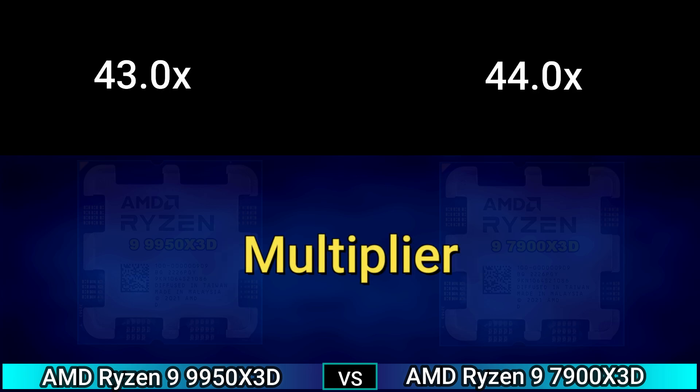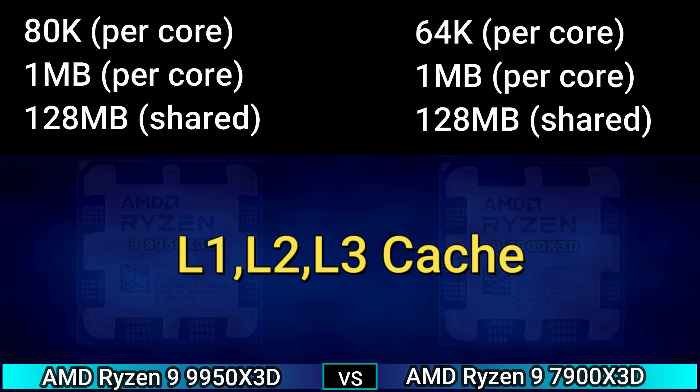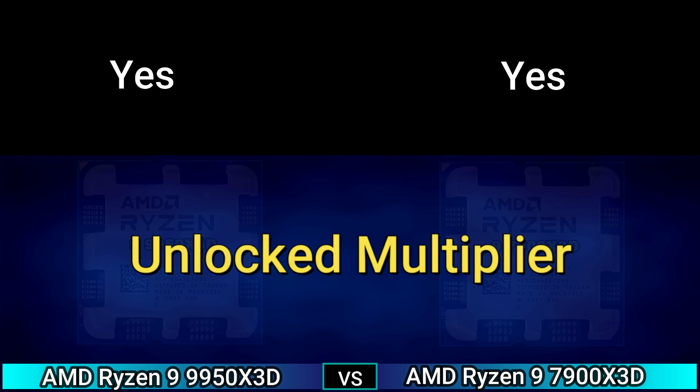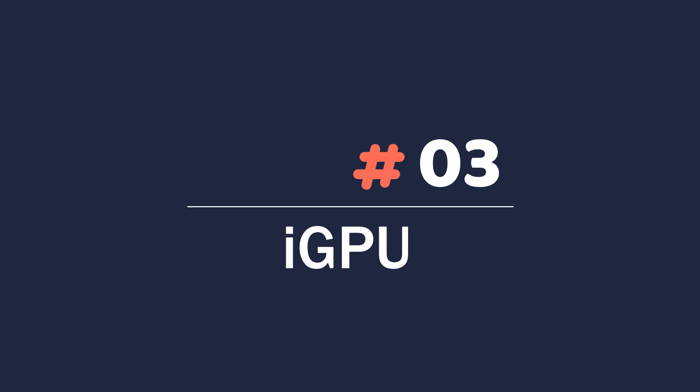L1 cache: 80 KB per core, L2 cache: 1 MB per core, L3 cache: 128 MB shared, and 64 KB per core, 1 MB per core, 128 MB shared. Unlocked multiplier: yes.